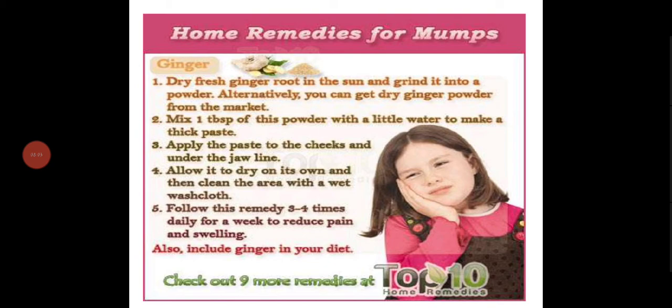A home remedy for mumps: dry fresh ginger root in the sun and grind it into powder, or get dry ginger powder from the market. Mix one tablespoon of this powder with a little water to make a thick paste. Apply the paste to the cheeks and under the jawline; allow it to dry on its own, then clean with a wet washcloth. Follow this remedy three to four times daily for a week to reduce pain and swelling.